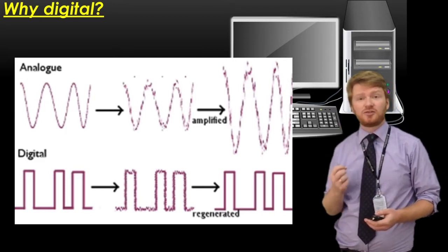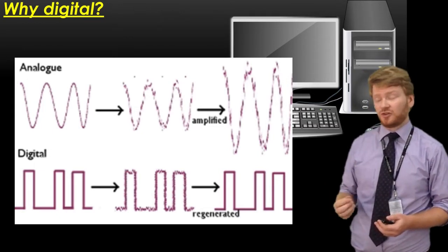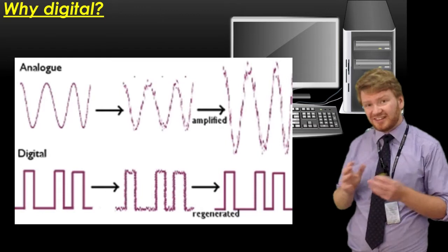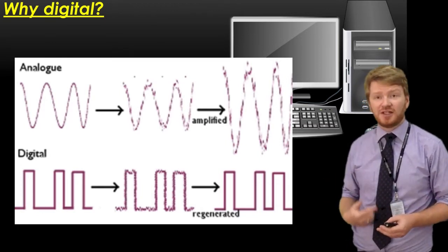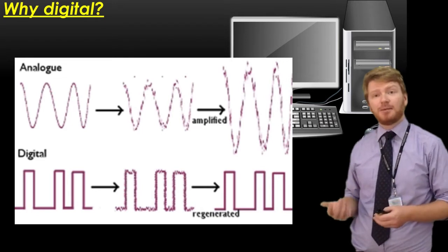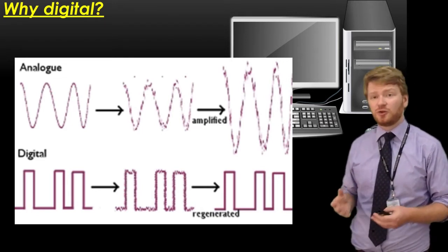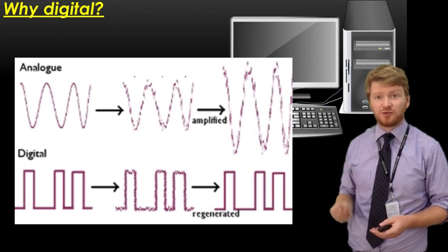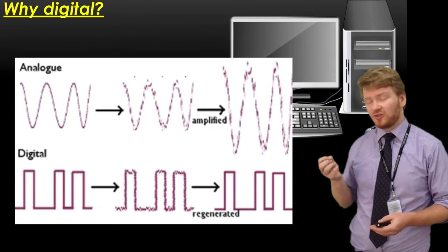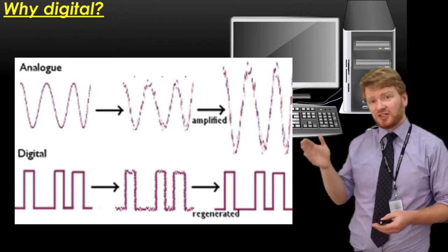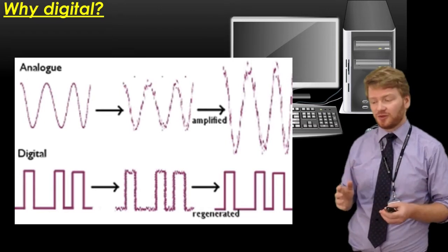The second reason has to do with noise. If you look at the top image, that's an analogue signal with noise added to it. Now if I amplify the analogue signal, I'm also going to amplify my noise. There's no easy way of getting rid of noise from an analogue signal because I can't tell what variation was supposed to be there and what's due to noise.